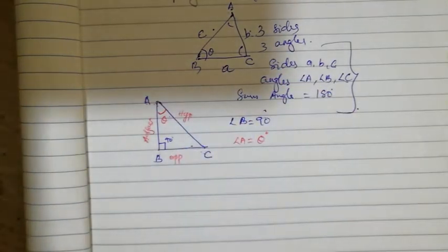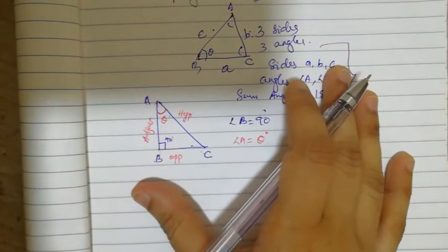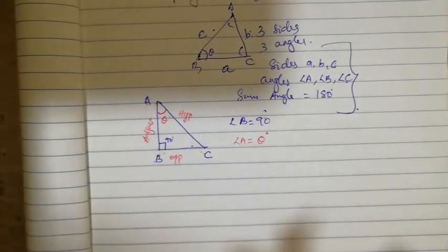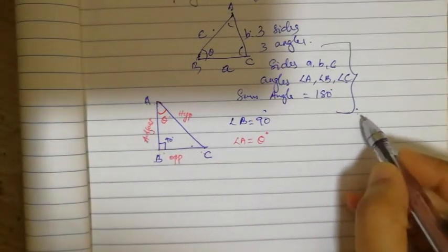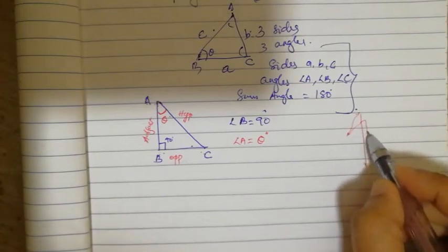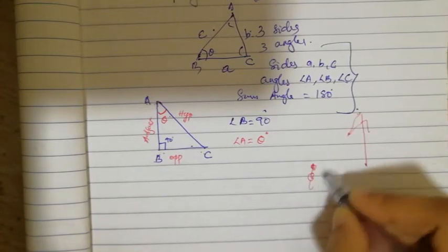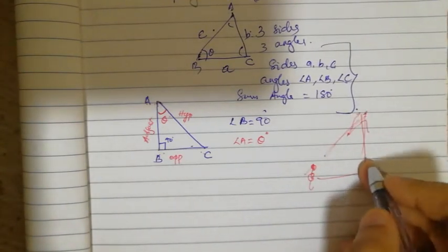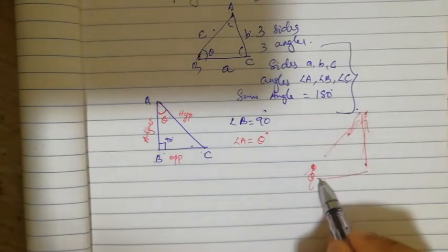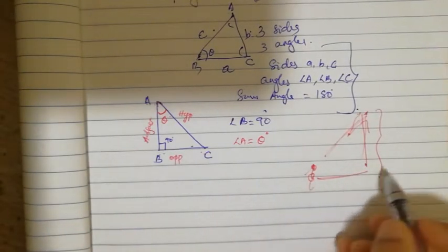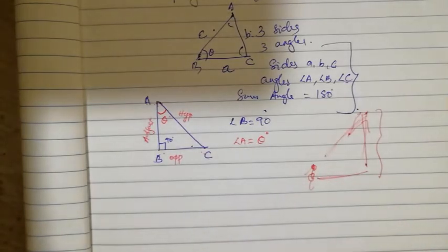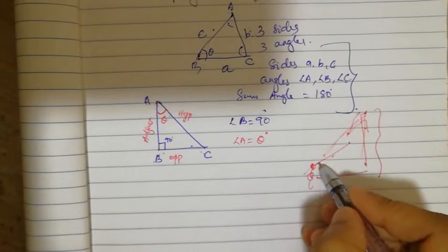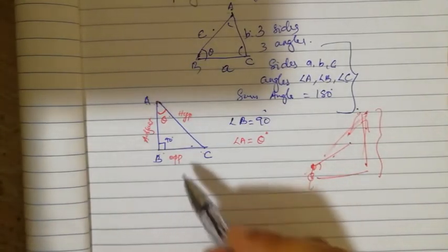AC is the hypotenuse. Trigonometry is based on solving problems of a right-angle triangle. How does it apply in our life? For example, there is a tree or a building standing here and we want to find its height. Using trigonometric relations, we can find the height or elevation of the building — that is the basic application of trigonometry.